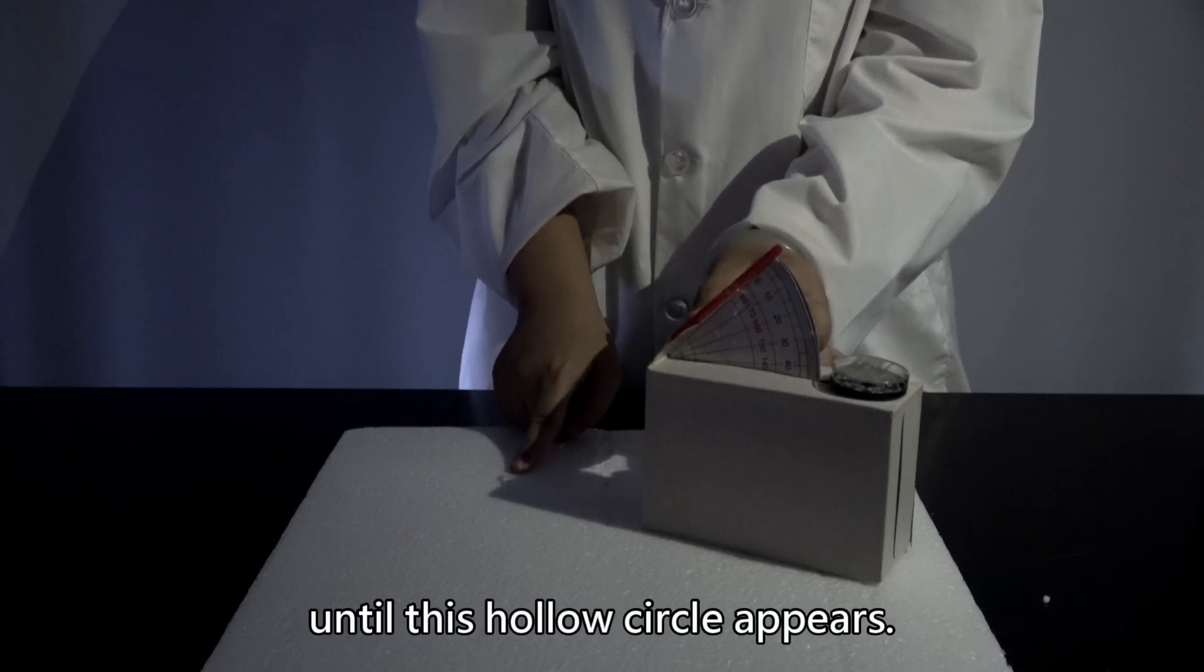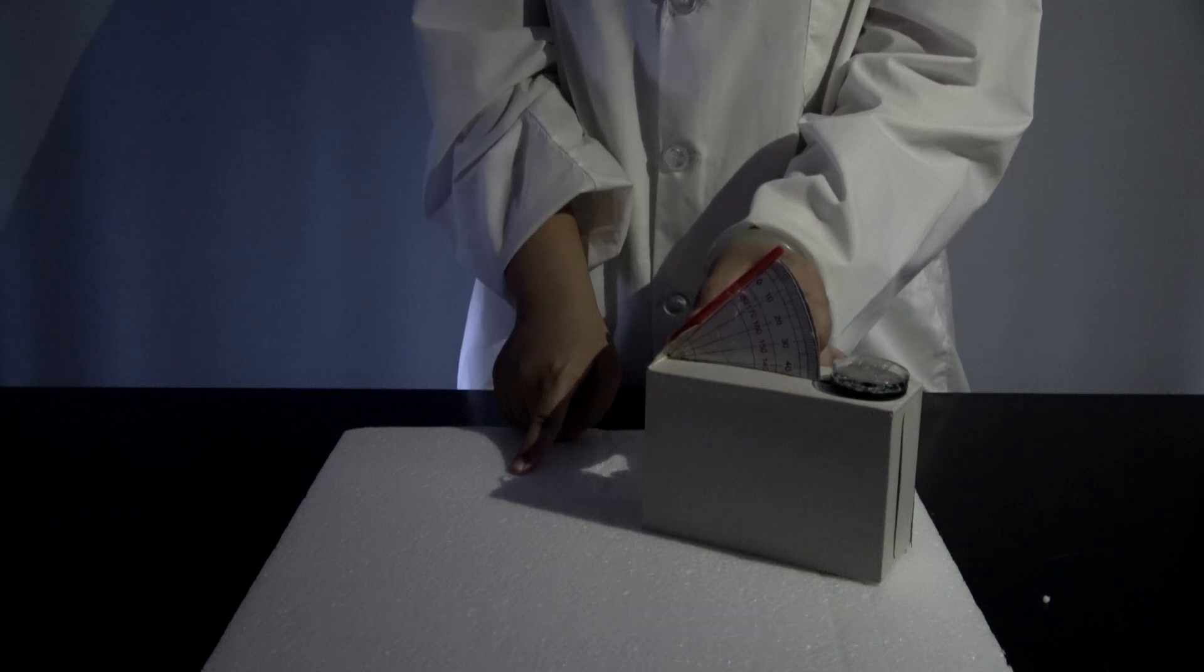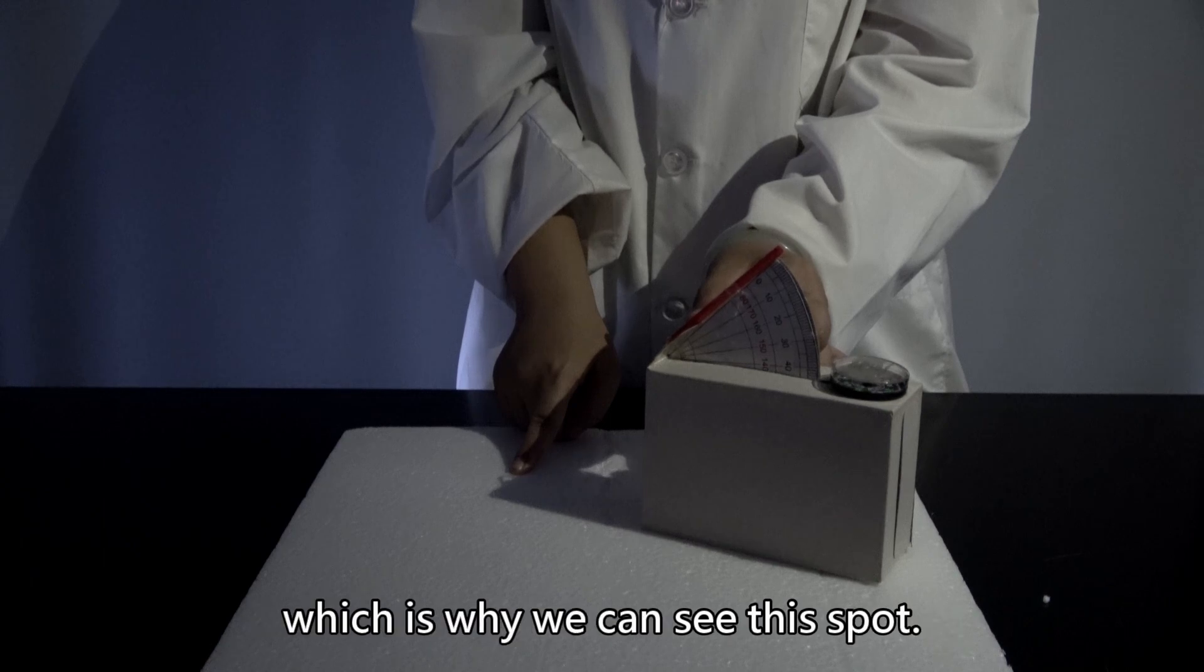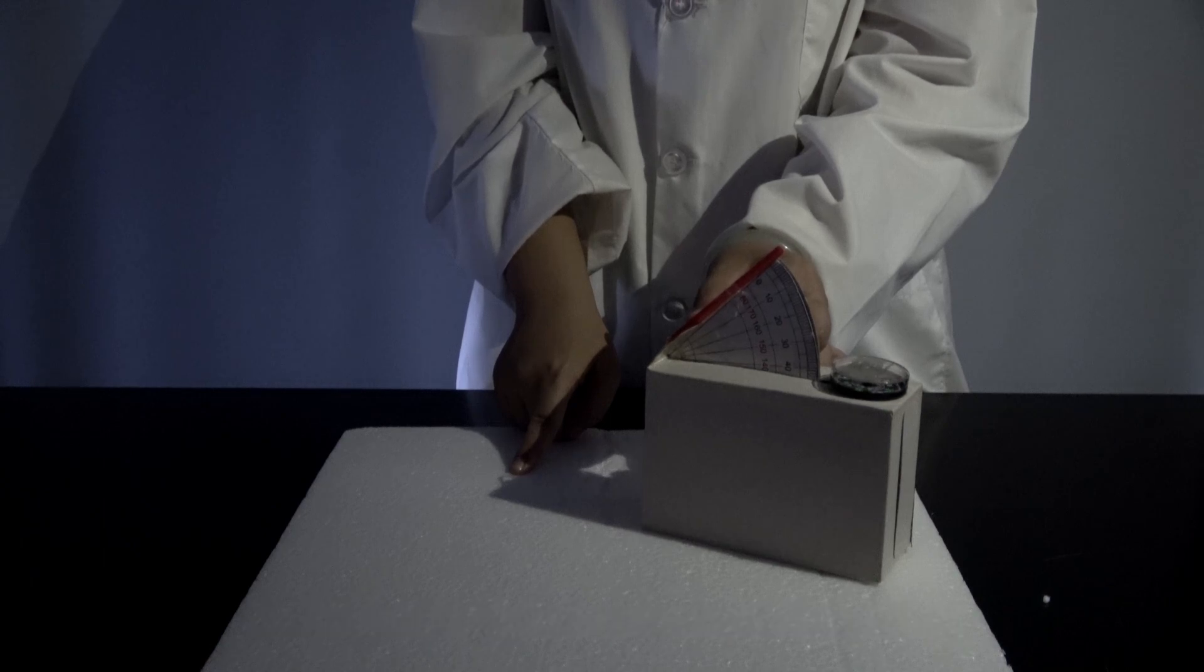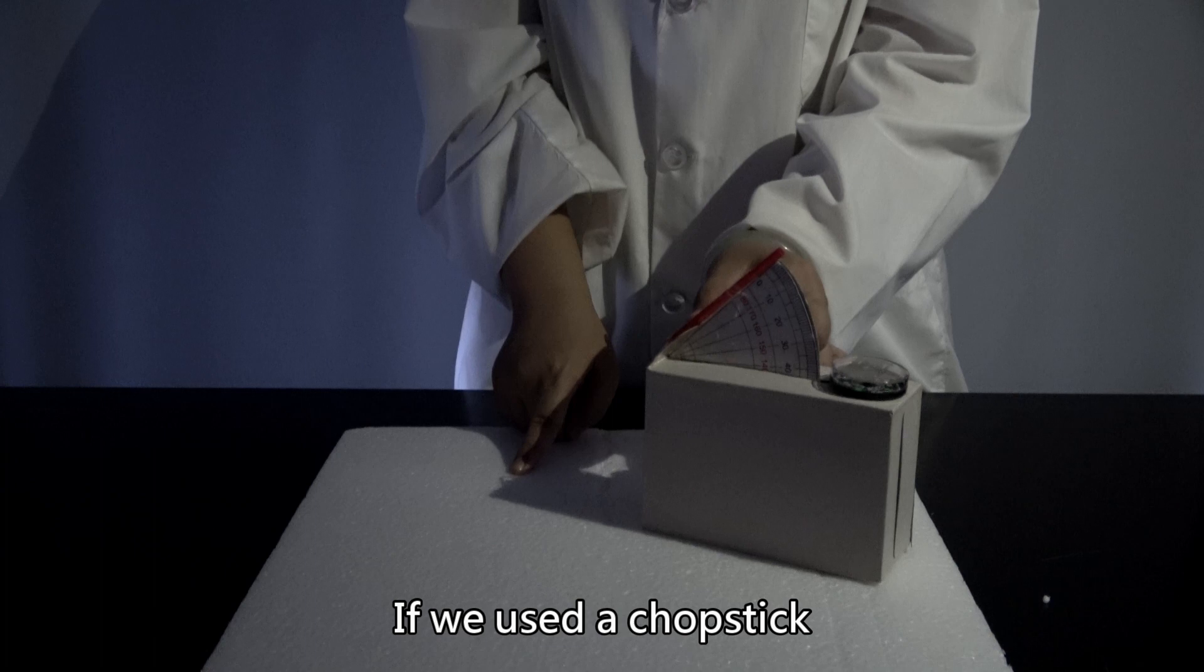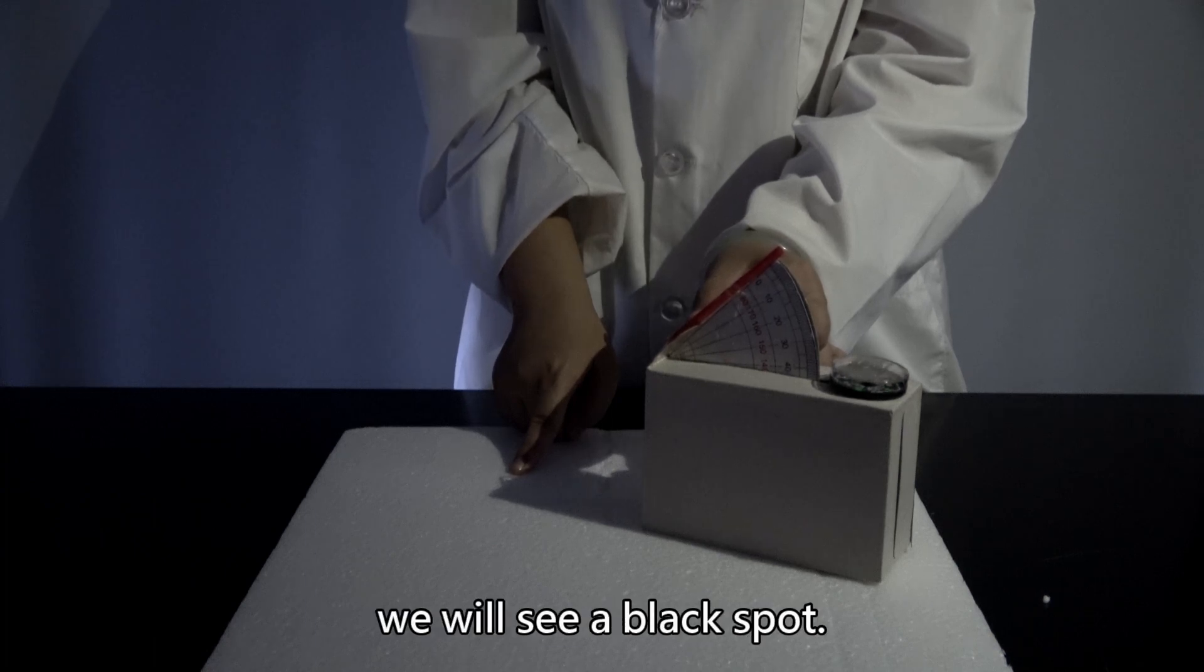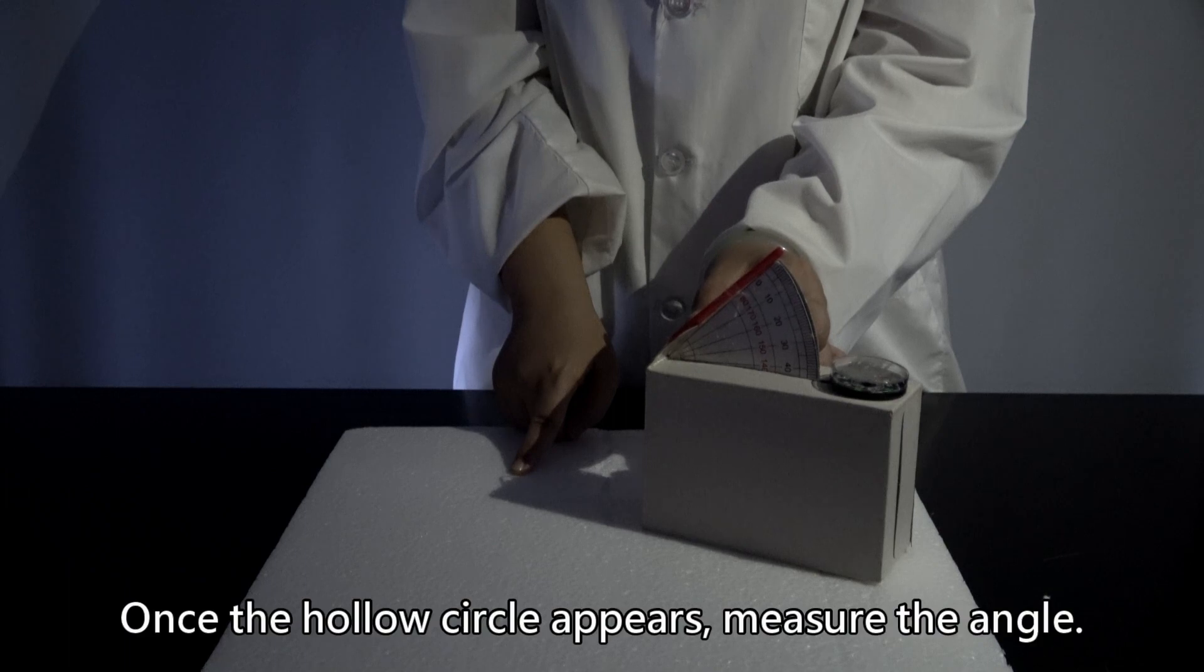Until this hollow circle appears. Note that the straw we used is hollow, which is why we can see the spot. If we use a chopstick or any solid object, we will see a black spot. Once the hollow circle appears, measure the angle.